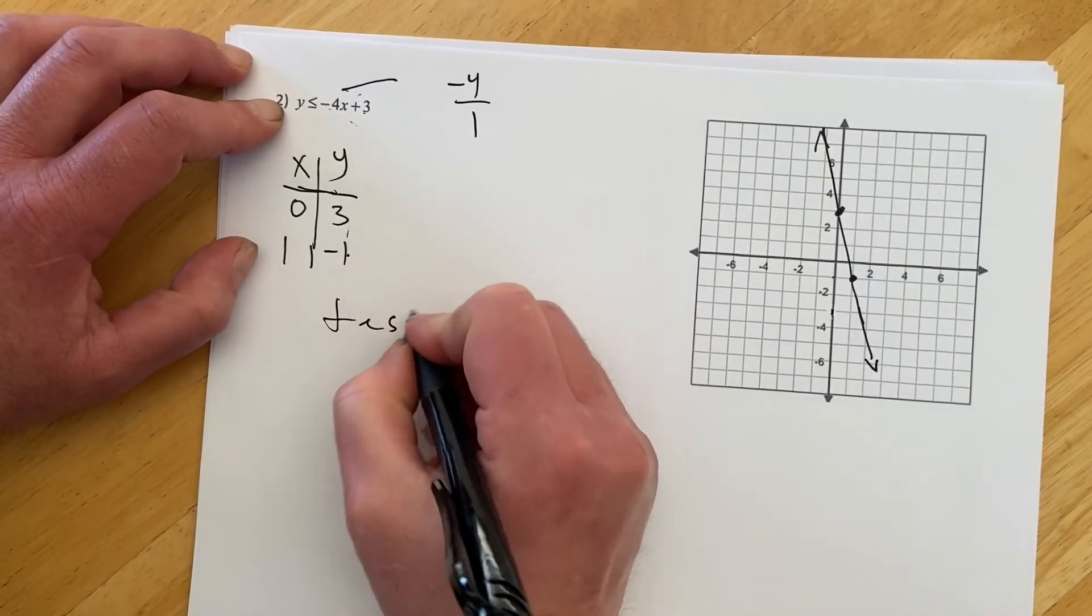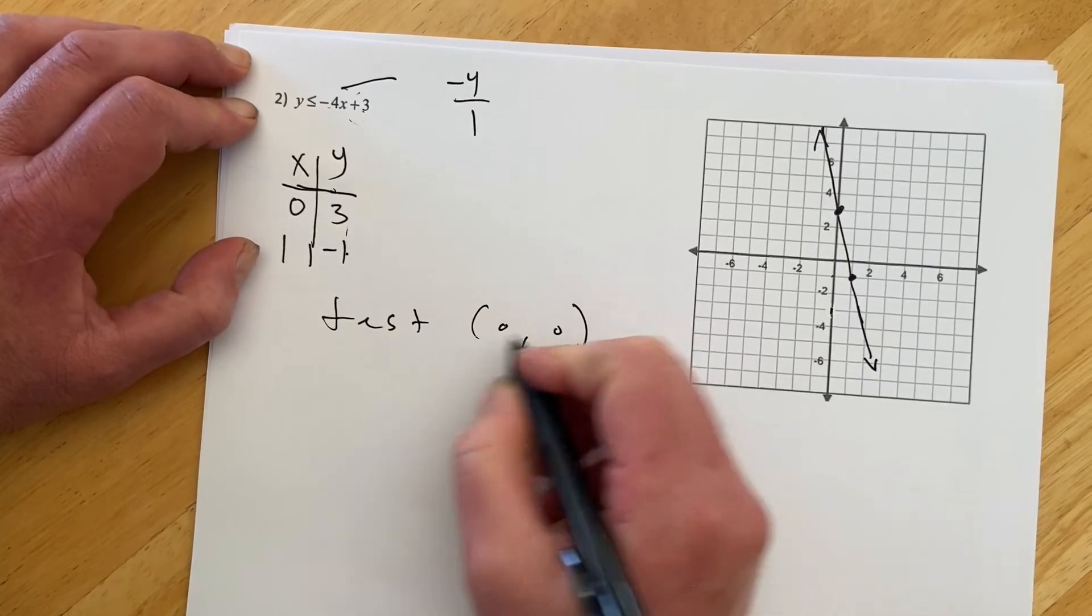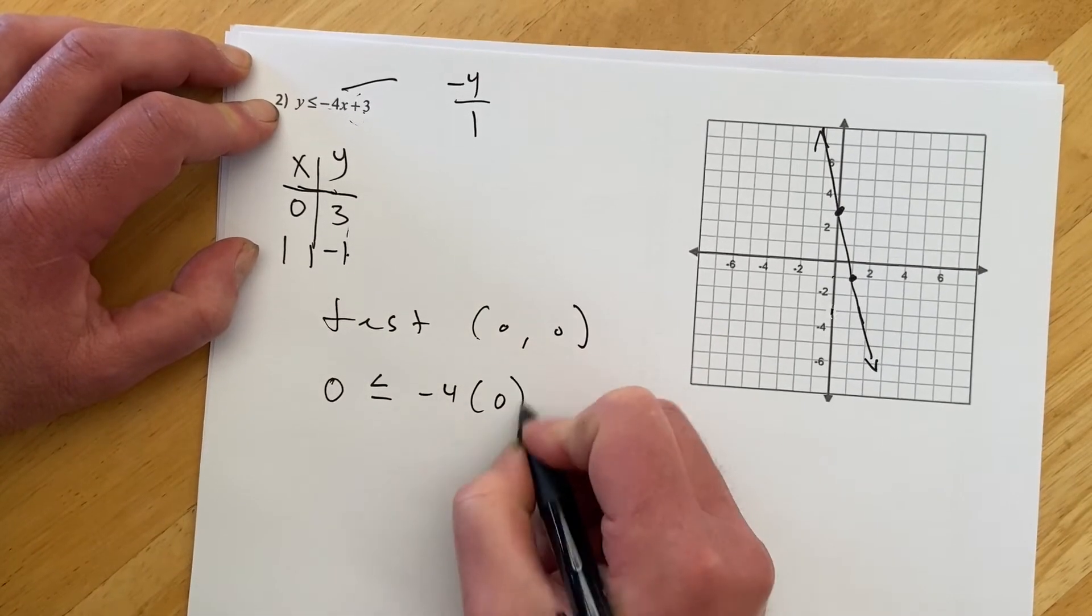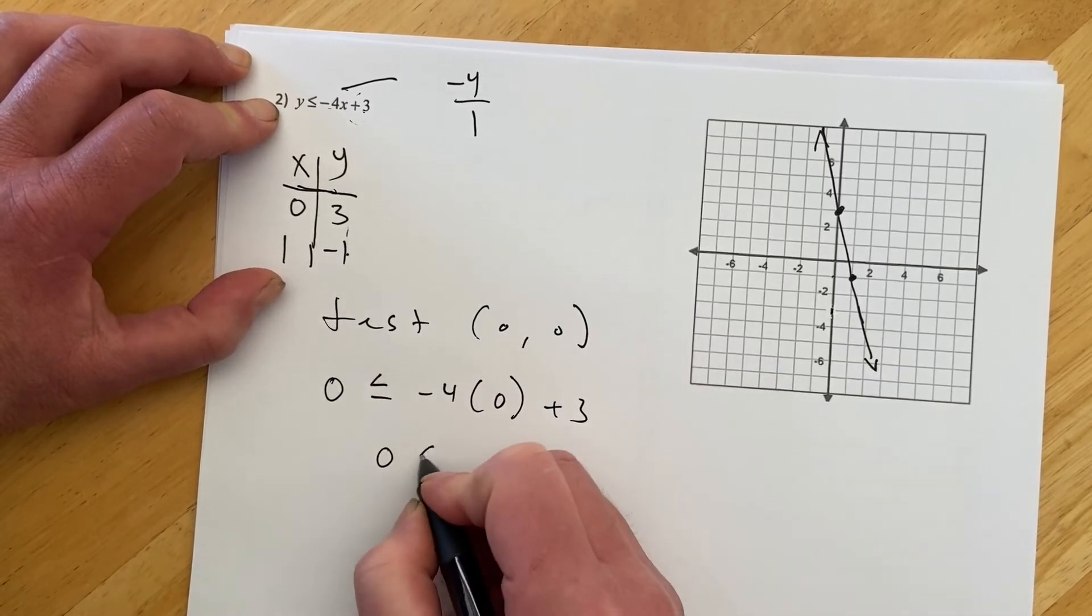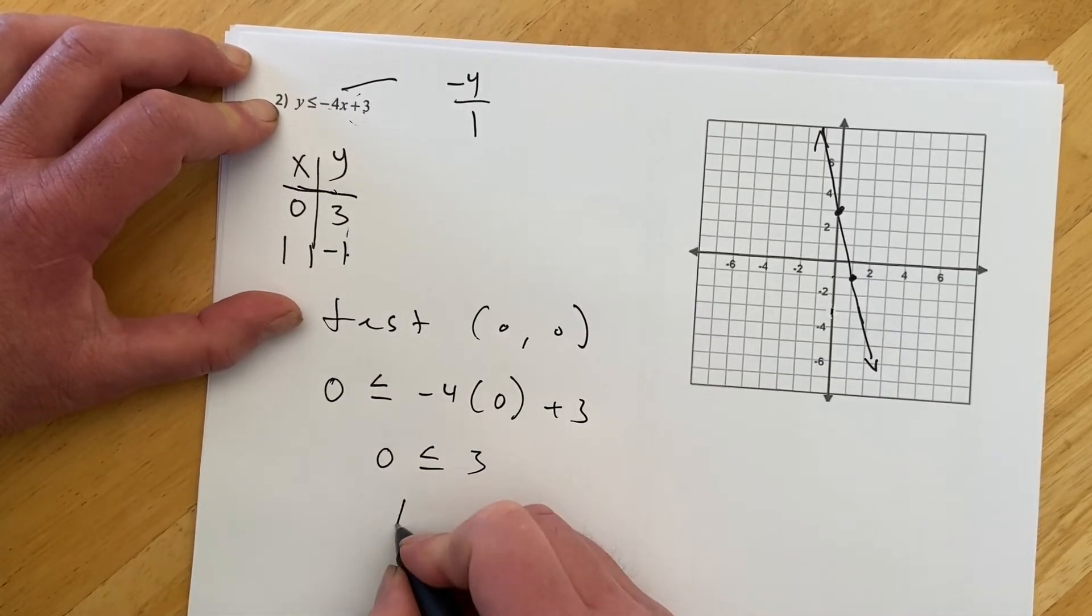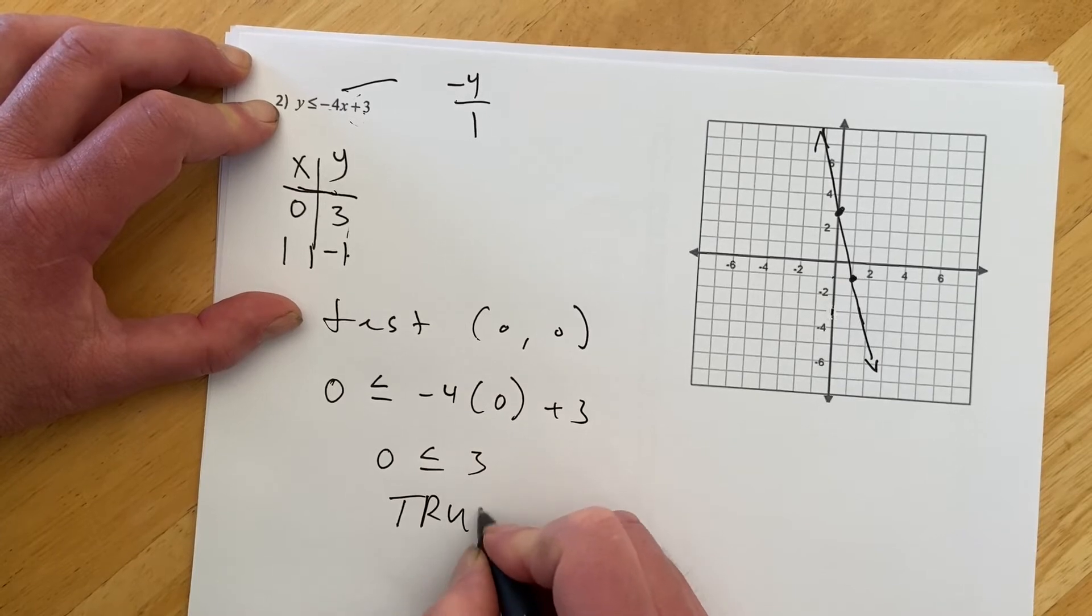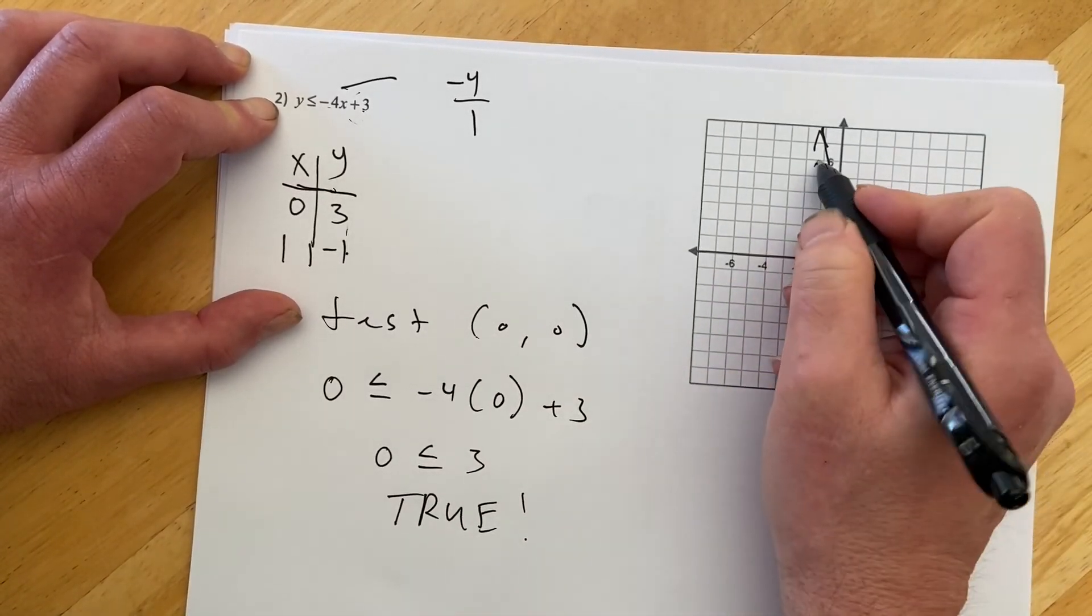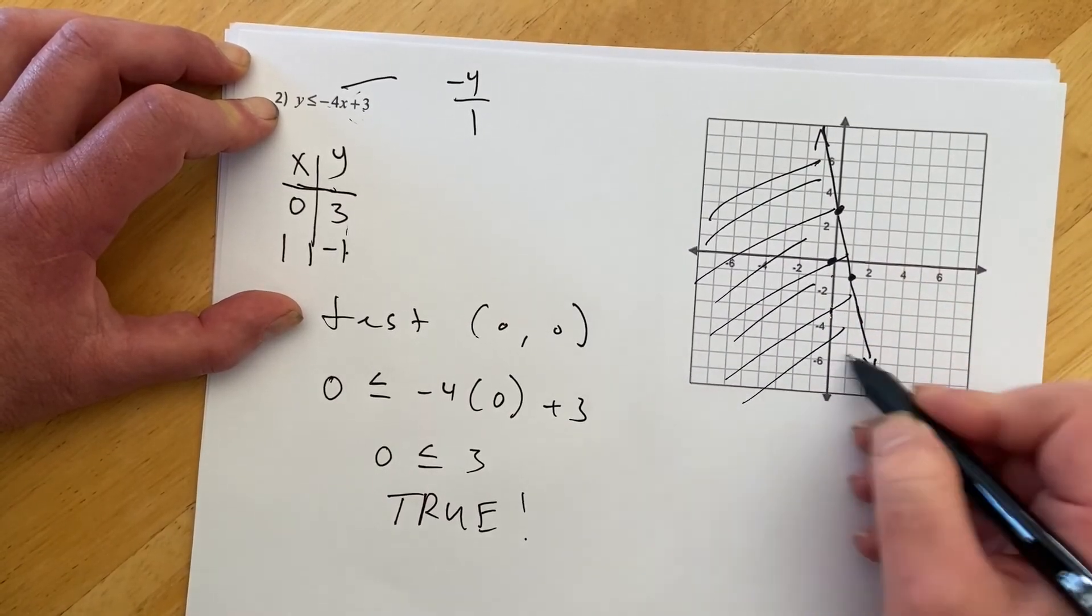And then we'll test 0, 0 again. So 0 is less than or equal to, negative 4 times 0 plus 3. 0 is less than or equal to 3. 0 is less than 3. That is true. So that means that this point right here worked. So that means we want to shade the side where it works.